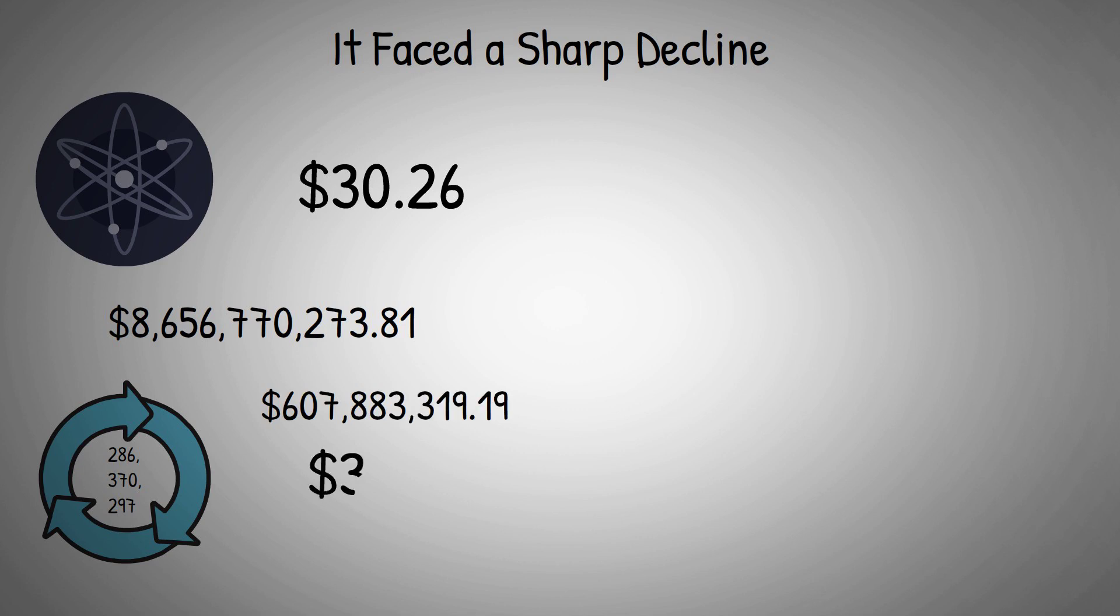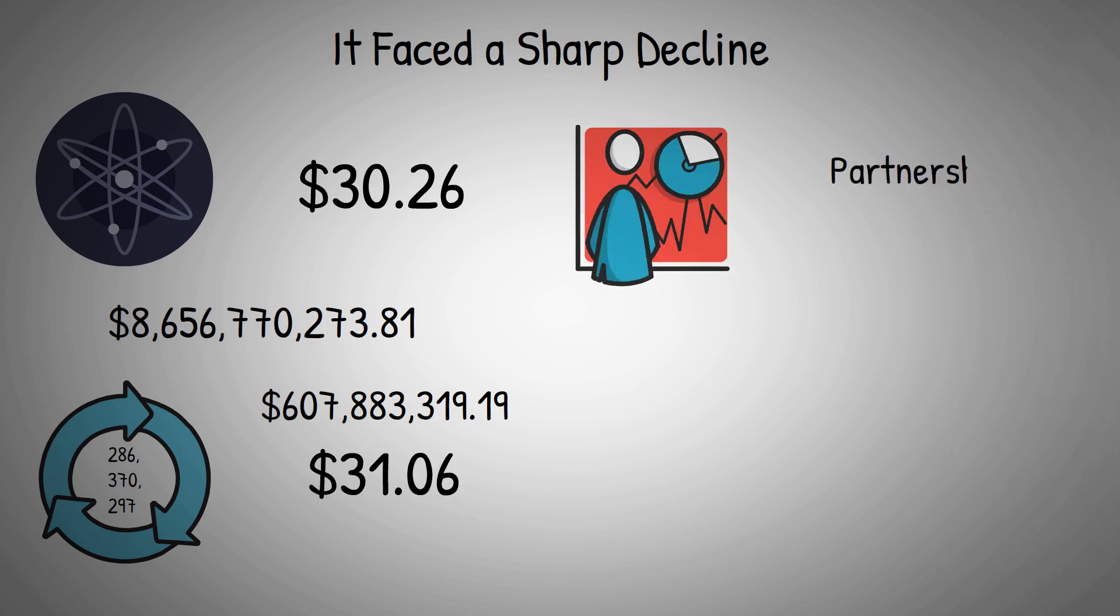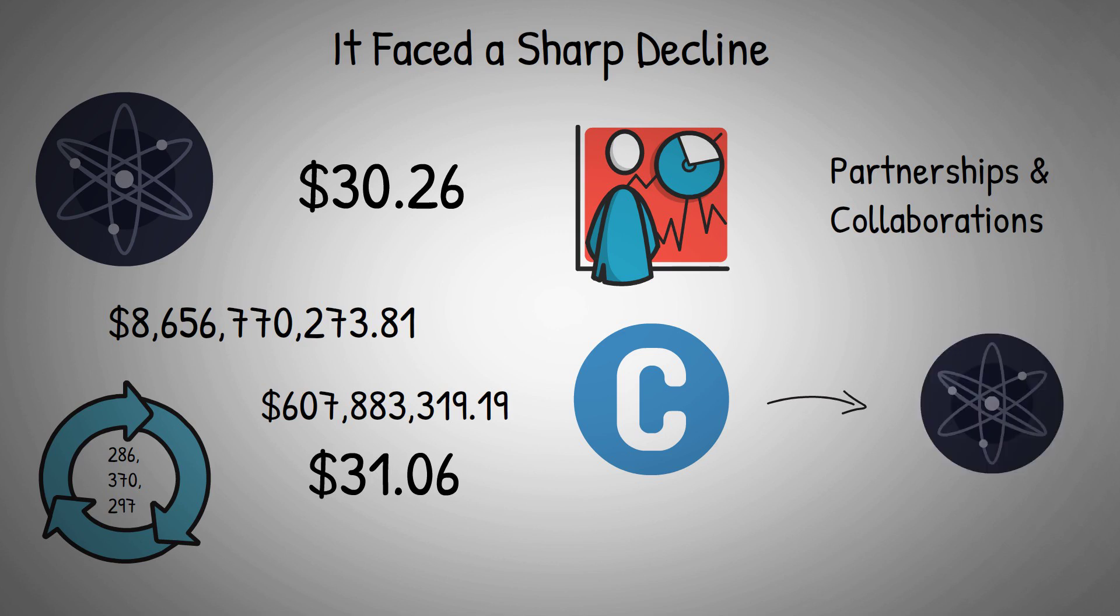The current price of Cosmos is $31.06. According to Atom prediction, with multiple partnerships and collaborations and community funding, the cryptocurrency market looks back at Atom to perform, reaching a price level of $63, which is quite optimistic but surely feasible by the end of 2022 in the short term.